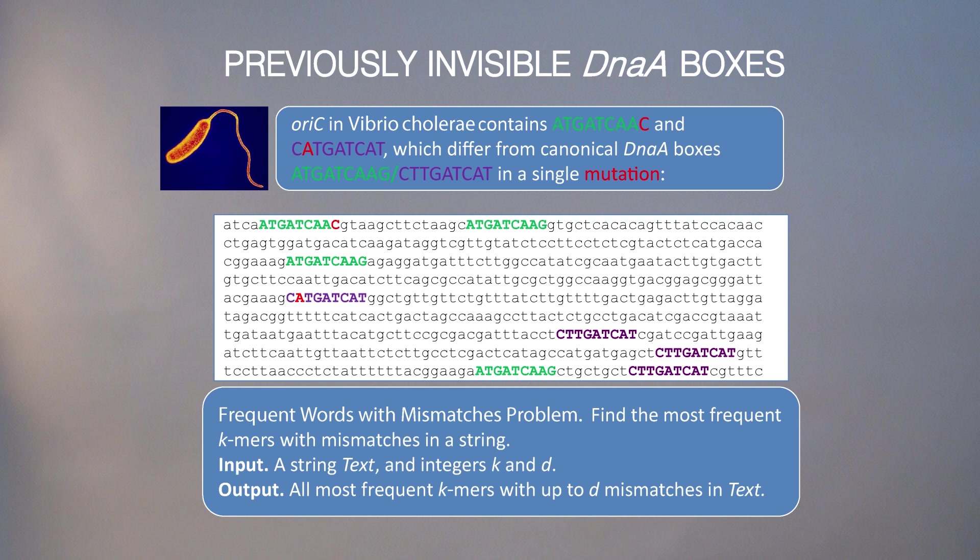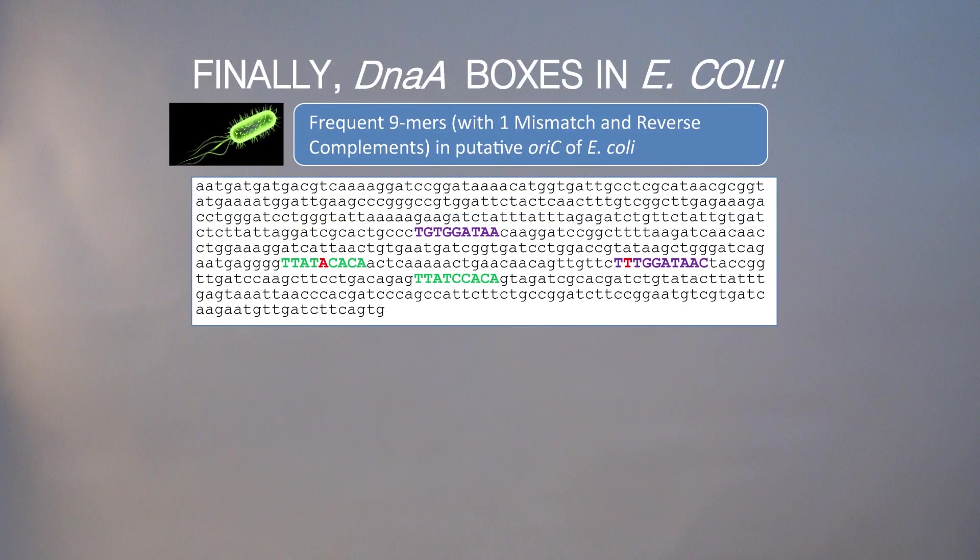To find this type of more elusive frequent words, we need to solve the frequent words with mismatches problem. When the input is a string text and integers K and D, we want to find all most frequent k-mers with at most D mismatches in the text. After we run our frequent words with mismatches problem, we do find more elusive frequent words in the E. coli genome, and they turn out to be indeed real DnaA boxes in E. coli.